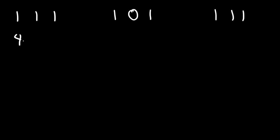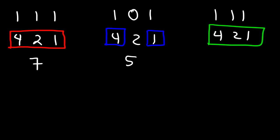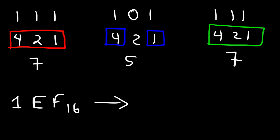When dealing with binary numbers in groups of 3, use 4, 2, 1. When dealing with groups of 4, use 8, 4, 2, 1. For this example, we have a 1 next to all of them, so 4 plus 2 plus 1 is 7. For the next one, we have a 1 next to the 4 and the 1, so that's 4 plus 1 which is 5. And for the last one, it's the same as the first: 4 plus 2 plus 1 is 7. So 1EF in the hexadecimal system corresponds to 757 in the octal system.